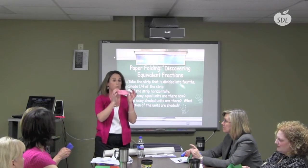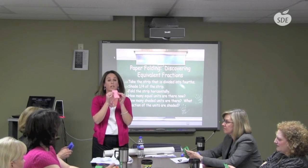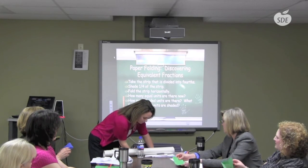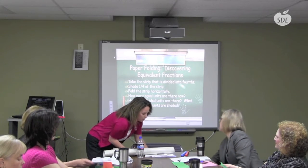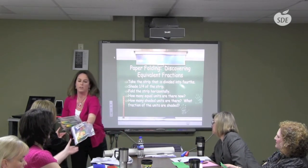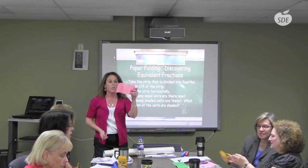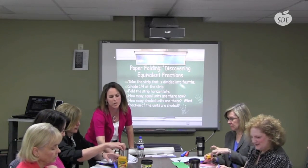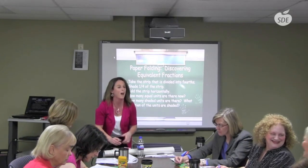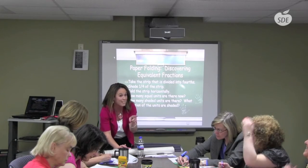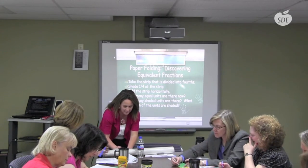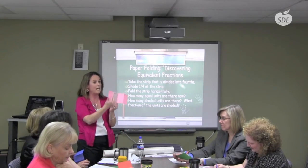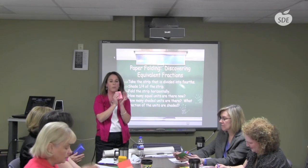To fold into fourths: first fold in half, then fold in half again to get four sections. Once opened, color one fourth of your strip — it doesn't matter which fourth. I always color one of the middle ones so students can see that one fourth does not always have to be the first section. Then fold your paper back into the four equal sections.